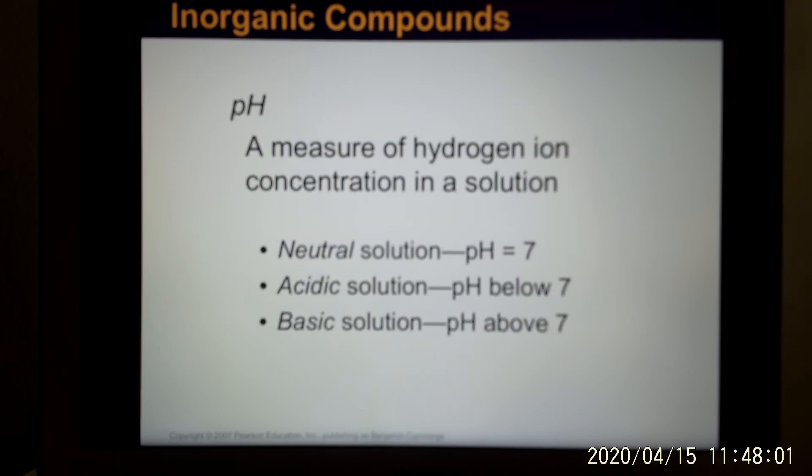We want to know how acidic a solution is, and we need to create a scale. The scale is called the pH scale. So it's a way to measure the hydrogen ions concentration. The scale comes from 0 to 14. If the scale is 7, that's neutral. The smaller the number, more acidic. So if the pH equals to 1, super acidic. pH equal to 6, a little bit acidic. If the number is bigger than 7, we call the basic solution.